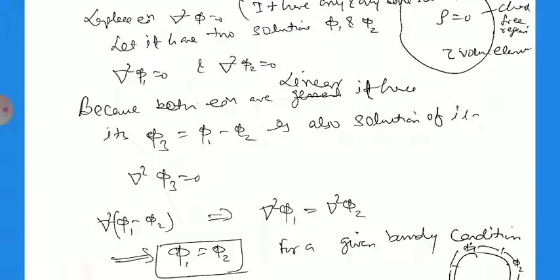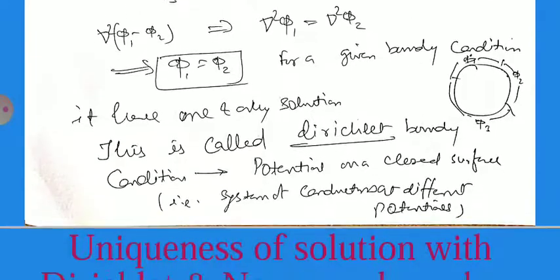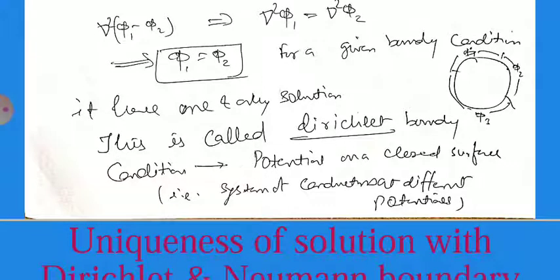This implies del squared phi_1 equals del squared phi_2, which means phi_1 equals phi_2. So given the boundary conditions of the conductor, even though there are many surfaces with different types of potentials phi_1, phi_2, phi_3, there is one and only one solution.